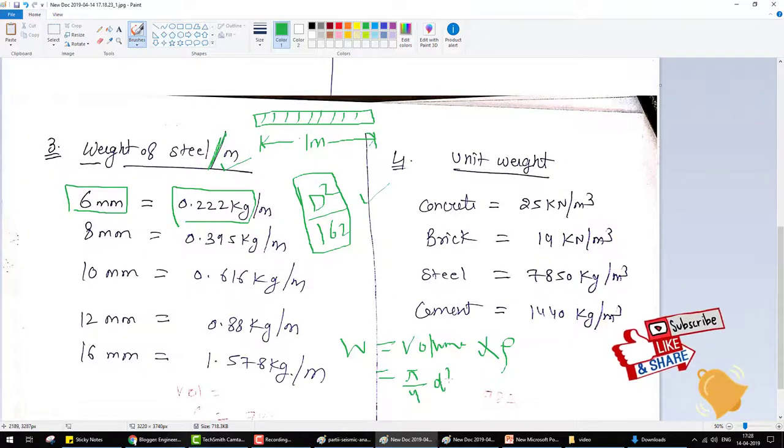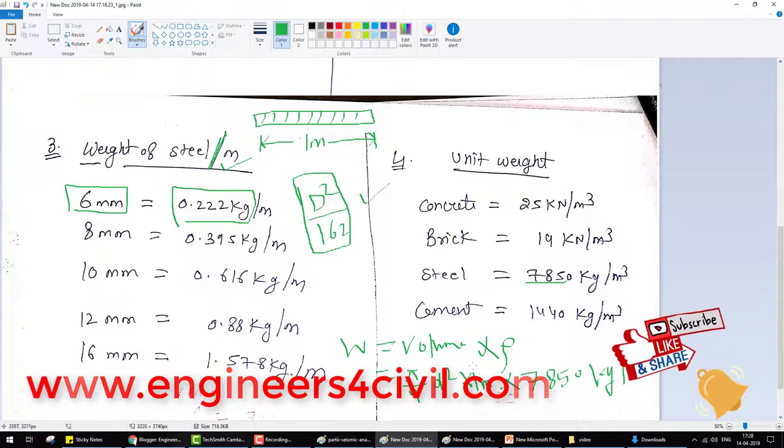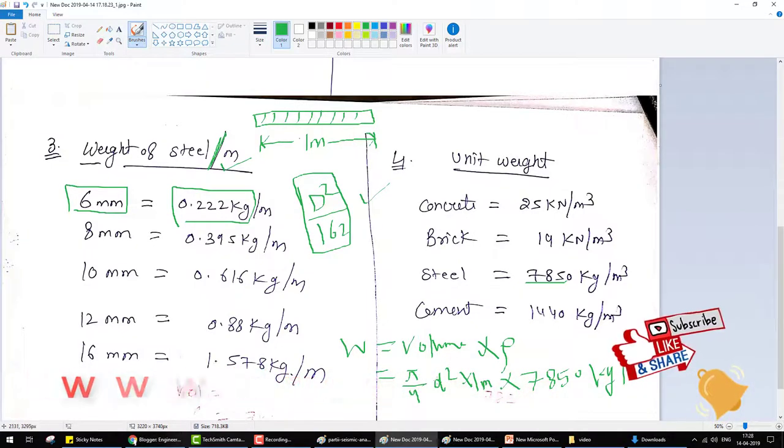Multiply by 1 meter because length is 1 meter, and multiply by density. Density of steel is 7850 kg per meter cube. Diameter in mm you convert to meter, then if you solve this equation you get this formula to calculate the weight of steel.